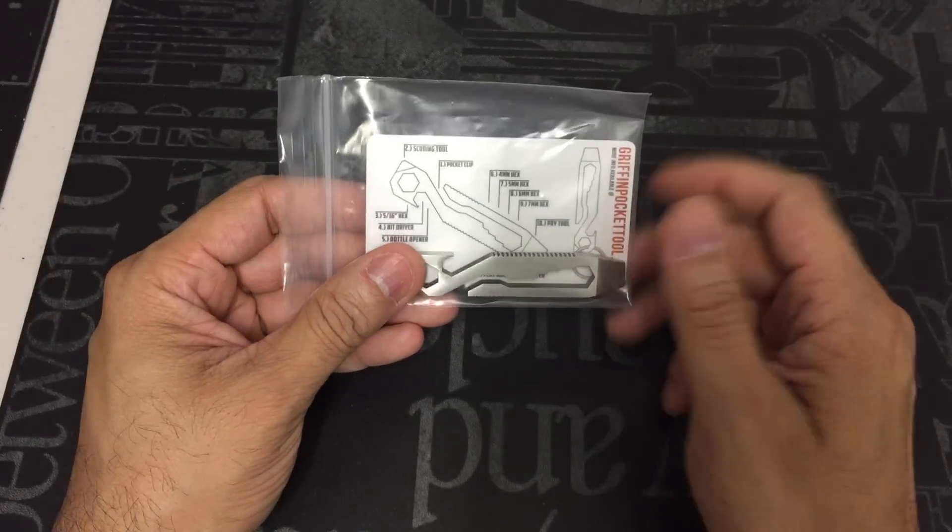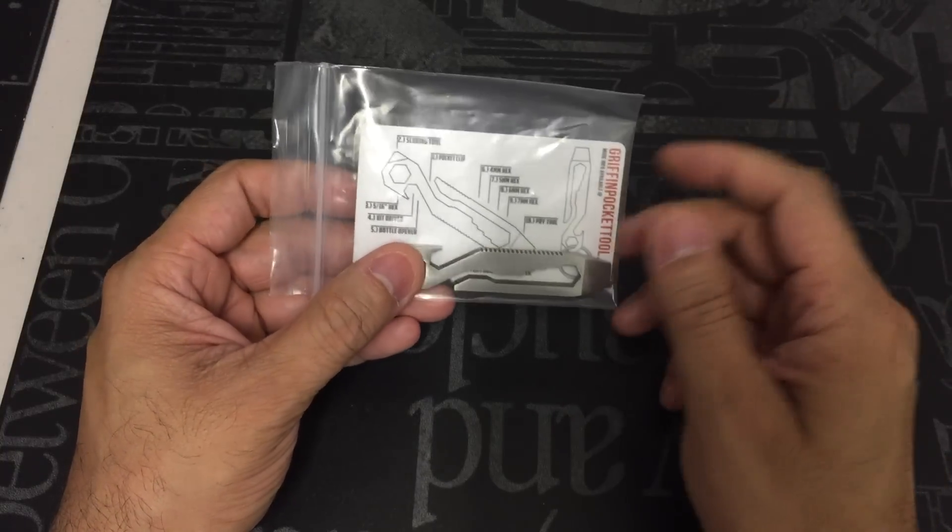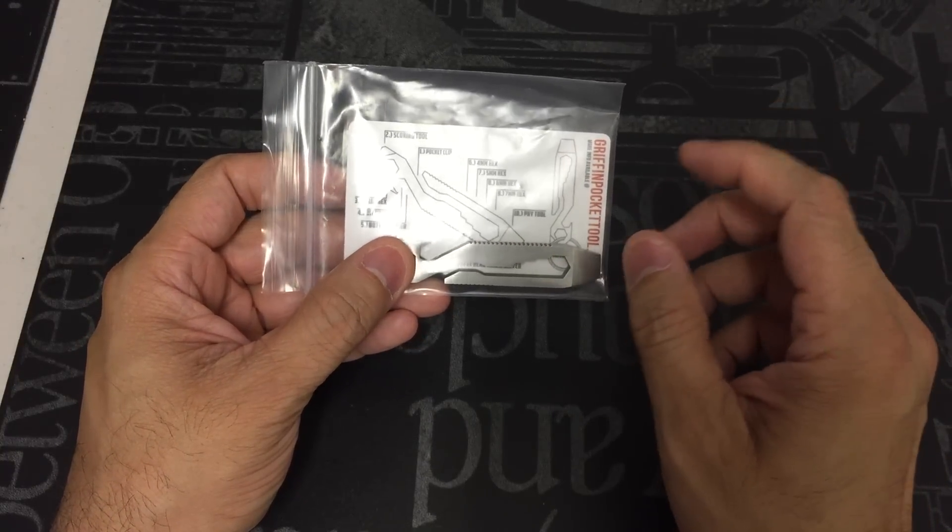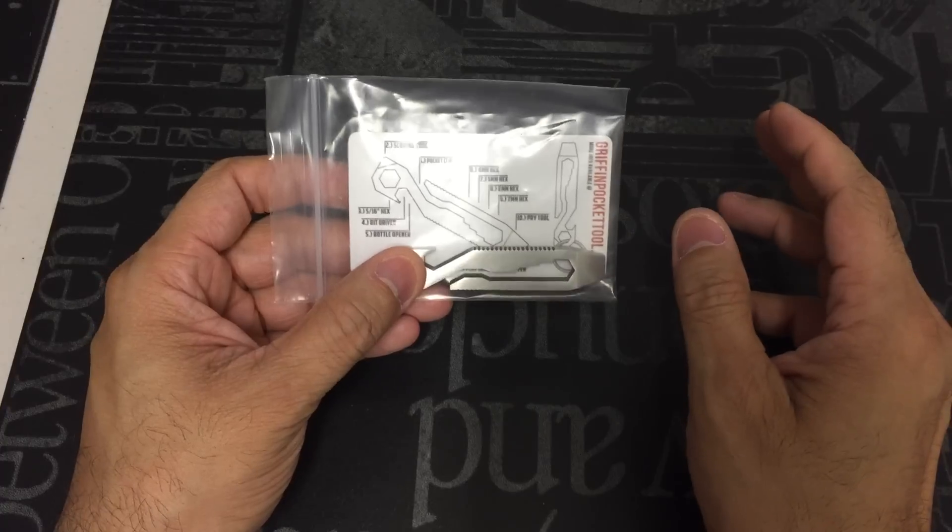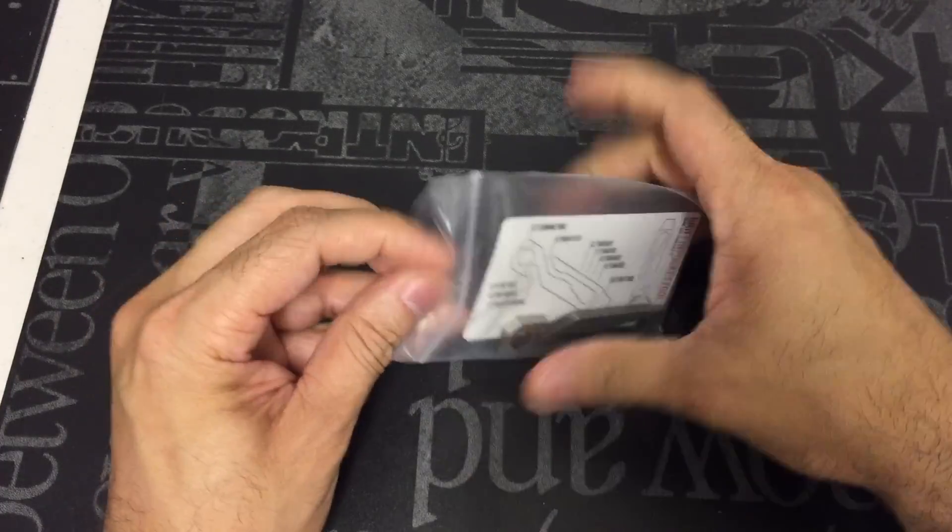The tool itself comes in a couple of different finishes. You have a stone wash and polish stainless steel finish, carbon fiber or titanium. And I do believe that titanium can also be anodized in a couple of different colors. So it does give you a couple of different options. So I'll go ahead and open it up so you guys can see it.